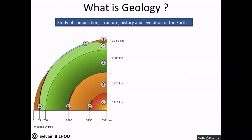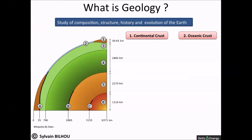The Earth is composed on its shallower part by the crust, which can be continental or oceanic. The continental crust is thicker than the oceanic crust. A discontinuity called the Mohorovičić discontinuity separates the crust and the mantle.